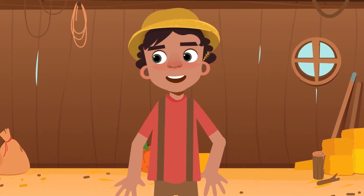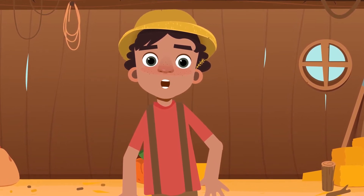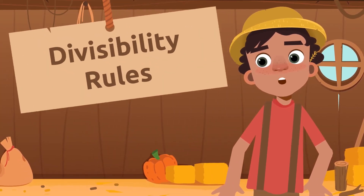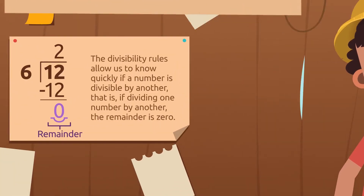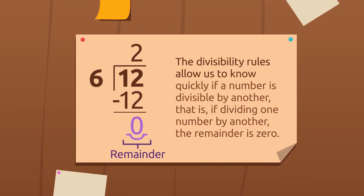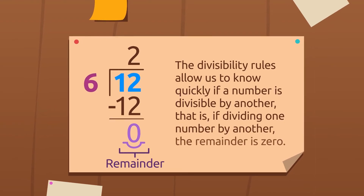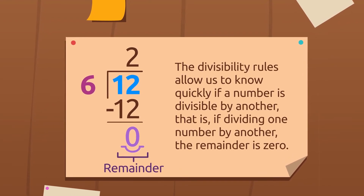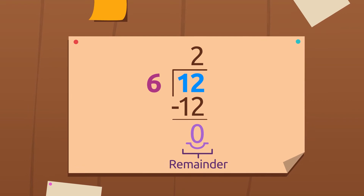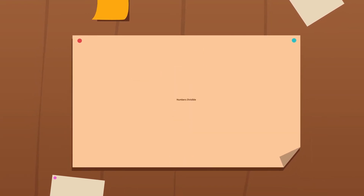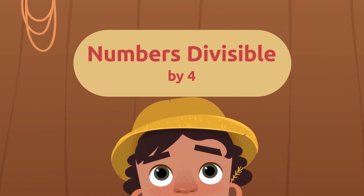I want my animals to be very comfortable, so I will build stables and chicken coops where I will group them. It's important that the coops and stables are full and that none of them are left out in the cold. For that, I will use the divisibility rule — it's a custom in my family. The divisibility rules allow us to know quickly if a number is divisible by another, that is, if dividing one number by another the remainder is zero. When a number is divisible by another, the number we divided by is known as its divisor. Today we'll learn about numbers divisible by four and eight.